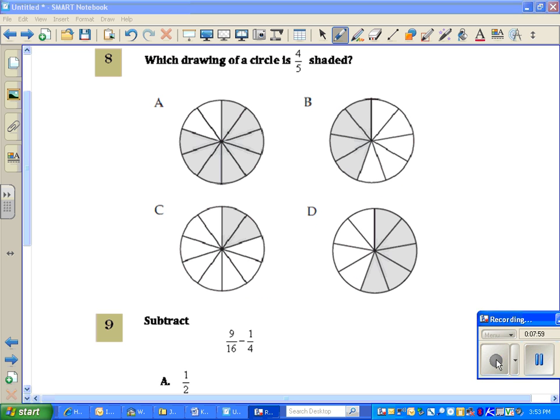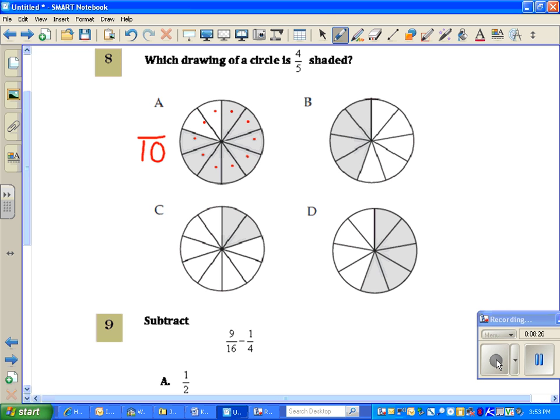Okay, question number eight. Which drawing of a circle is four-fifths shaded? I'm looking at the pictures and I notice none of them have fifths. Let me count and see what the fraction of each of them is. So there's 1, 2, 3, 4, 5, 6, 7, 8, 9, 10 parts. So my denominator is 10. Let me see how many are shaded in. 1, 2, 3, 4, 5, 6, 7, 8. 8 tenths. I can reduce that because it has to be reduced because it says fifths.